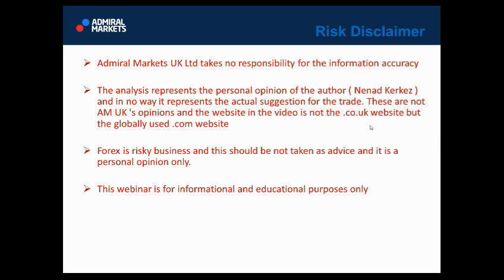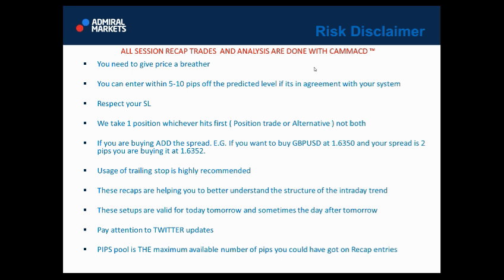Now, pay attention to 60.30 also on GBP/USD — it might be good for a sell with a 30 pip stop loss targeting 59.80. Around 60.30 we might get a sell opportunity towards 59.80. Don't use big risk because it's a retracement. GBP/USD is very close to the sell level, so you can try that and put your stop loss at 60.55.